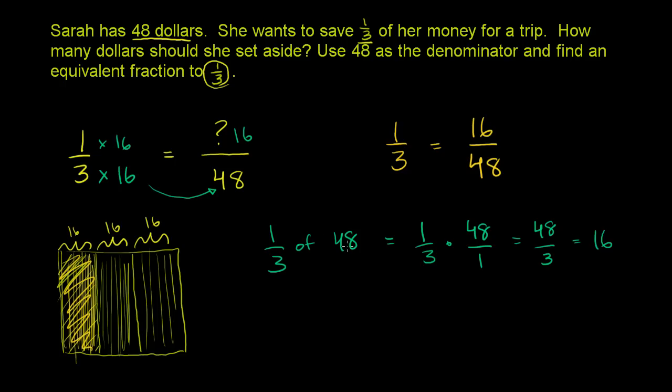So 1/3 of 48 is 16, or 16 over 48 is 1/3. Hopefully that makes sense, too.